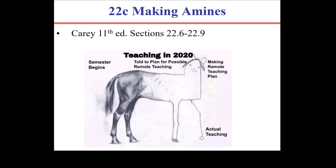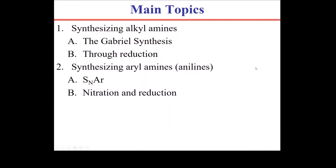In this lecture, I'm going to show you several different ways of making amines. Specifically, we're going to look at making alkyl amines and then aryl amines. The alkyl amines are made through a process called the Gabriel synthesis, or we can reduce nitriles and azide compounds. And aryl amines are made through SNAr, nucleophilic aromatic substitution, or electrophilic aromatic substitution that puts a nitro group on the benzene ring and then reducing it. Both SNAr and nitration are reactions that we looked at in a previous chapter.